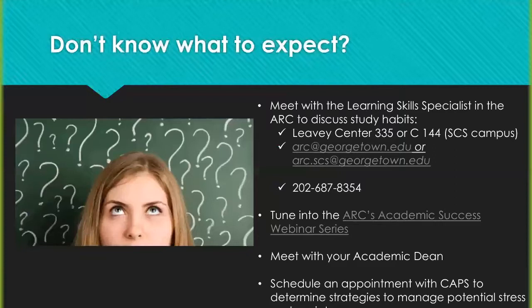The third suggestion is to meet with your academic dean. If you're really not sure about your degree progress or what program fits your interest, make sure you're in contact with your academic dean — they're going to be one of the main support systems for you. Make sure you know their name, where their office is, have their contact information, and set up an appointment as soon as you can. The last suggestion is to schedule an appointment with CAP. If you're feeling anxious or overwhelmed by the workload, use our psychologists and psychiatrists on campus to navigate those conversations, dig deep, figure out the root of those issues, and explore that so you can be successful here at Georgetown.